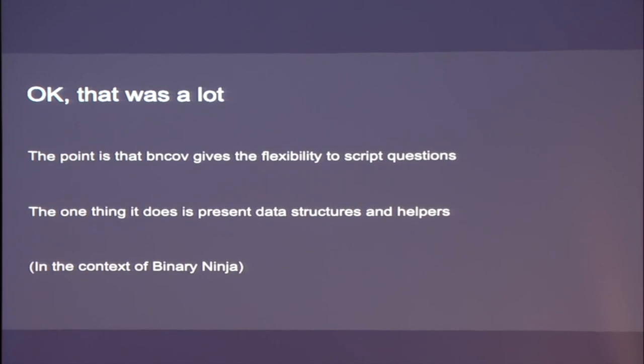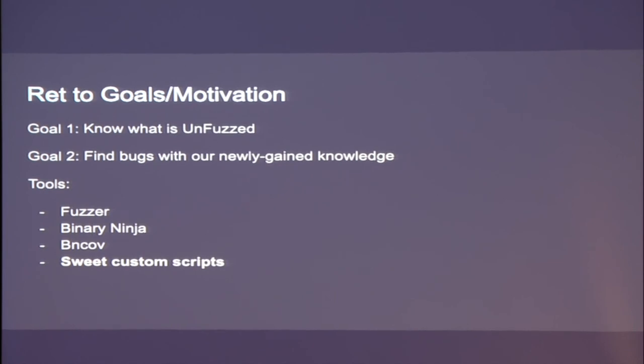BNCov doesn't give you the answers — it gives you the ability to ask questions and then answer those. Really, if there's anything that's the magic here, it's the Binary Ninja scripting environment. I just introduced a really simple coverage abstraction that allows you to link inputs to all of that other information. We're going to know what is unfuzzed, find bugs with what we know. The only things you need are a fuzzer (coverage-guided is recommended), Binary Ninja, BNCov, and those custom scripts that you're now writing.